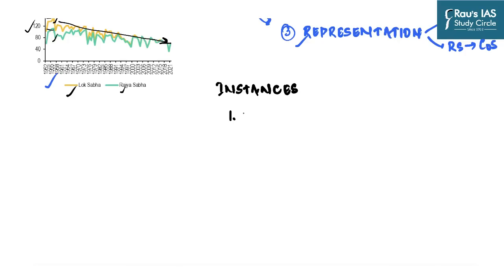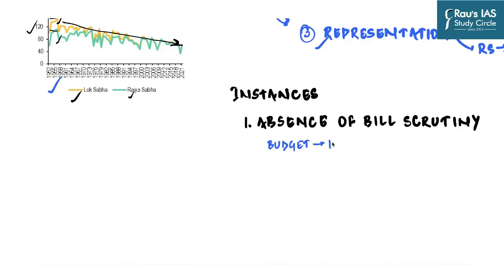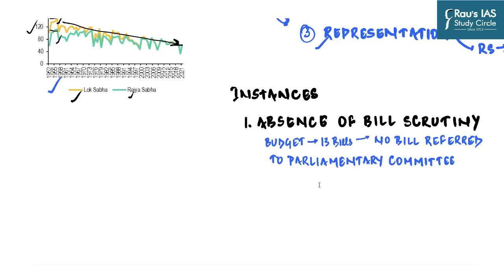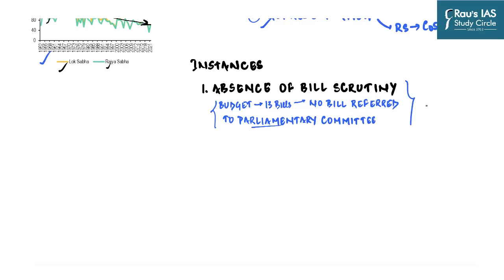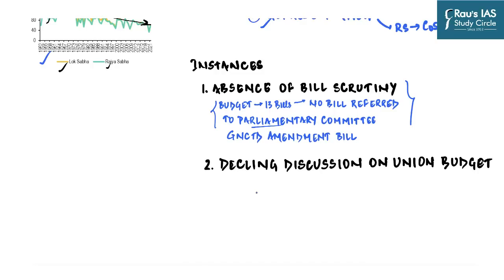We know it through several instances. First, there is an absolute absence of bill scrutiny. During a recent budget session, 13 bills were introduced and not even one was referred to a parliamentary committee for examination. Bills, once they become Acts, govern the whole country. If they are not properly investigated and dissected — especially in parliamentary committees — a lot of issues will arise. The best example is the GNCTD Amendment Bill 2021.